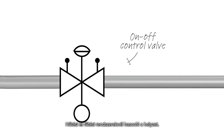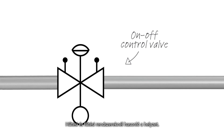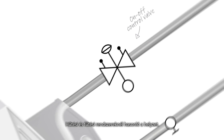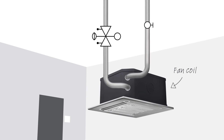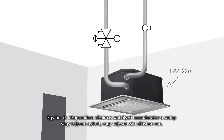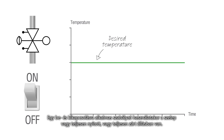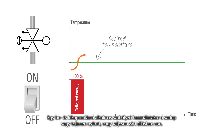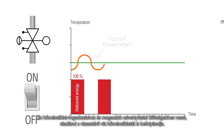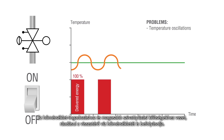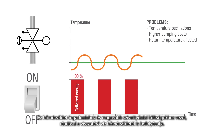Similarly in heating and cooling systems, if you use on-off control, the valve is either fully open and delivers 100% flow, or fully shut. This leads to temperature oscillations and higher pumping costs, and the return temperature is also affected.